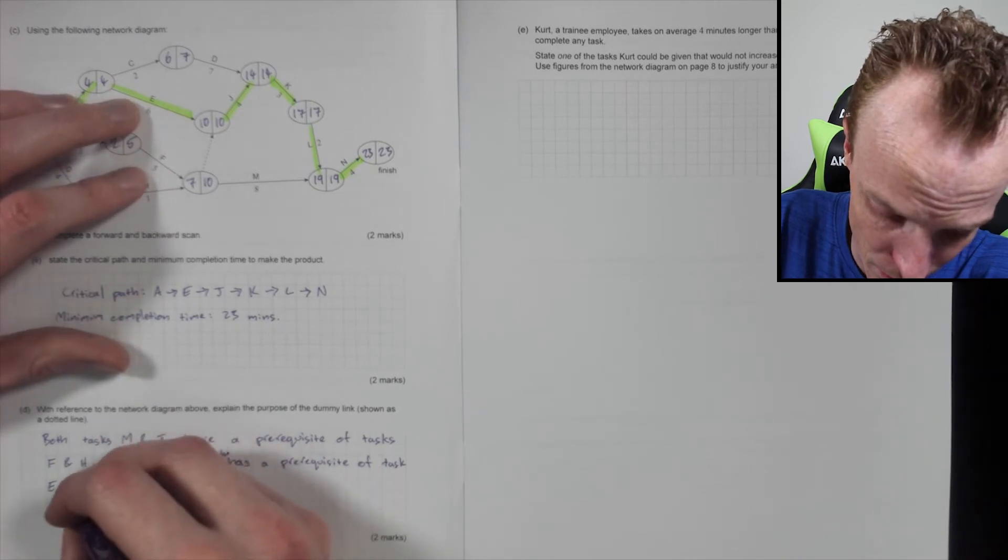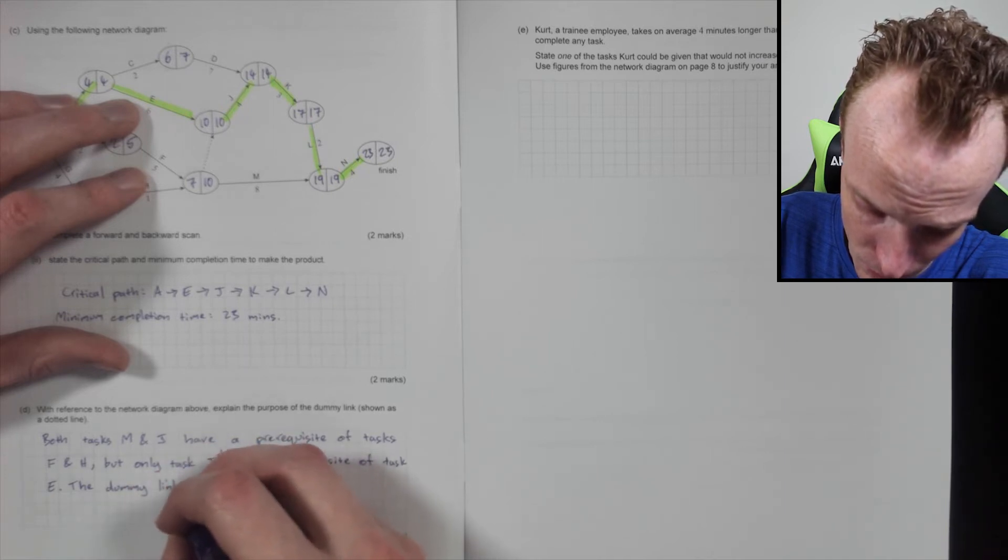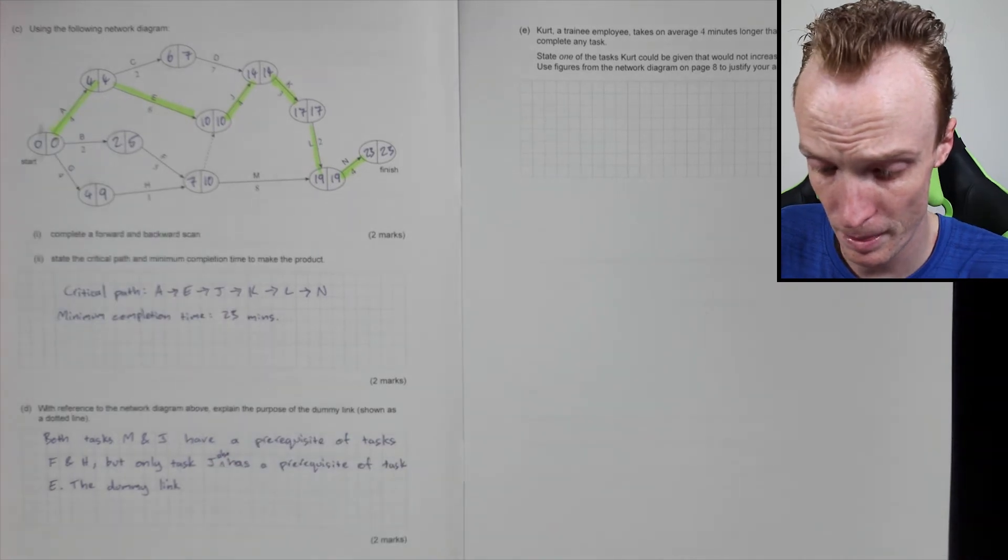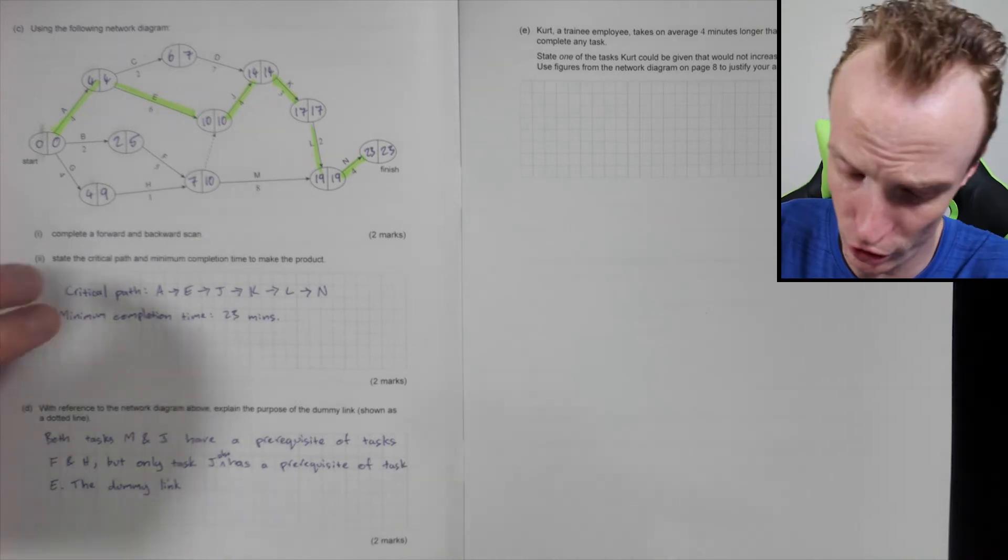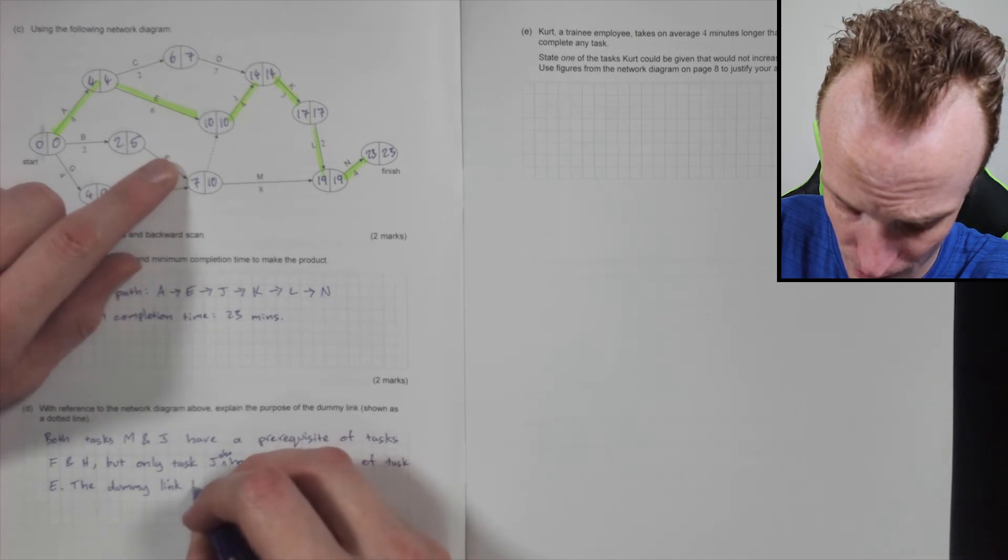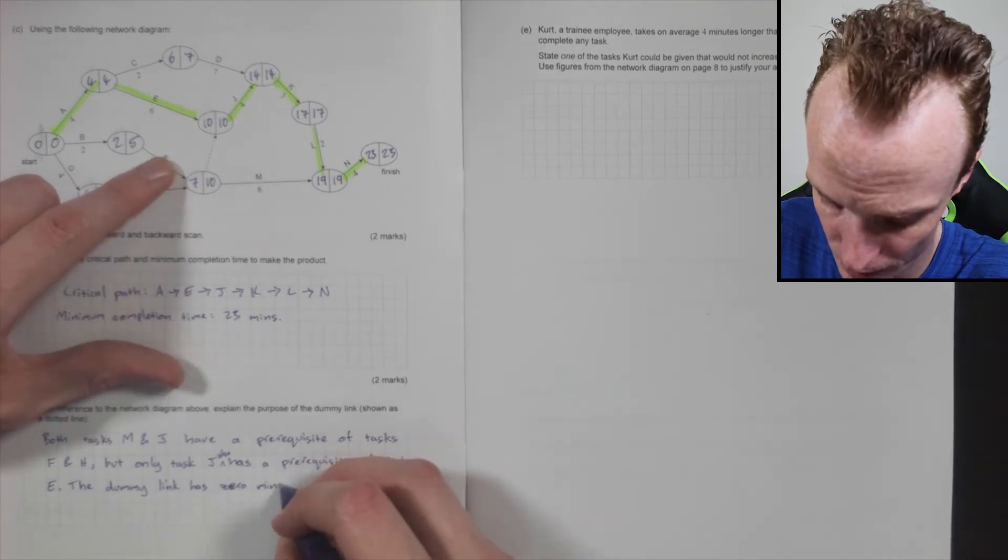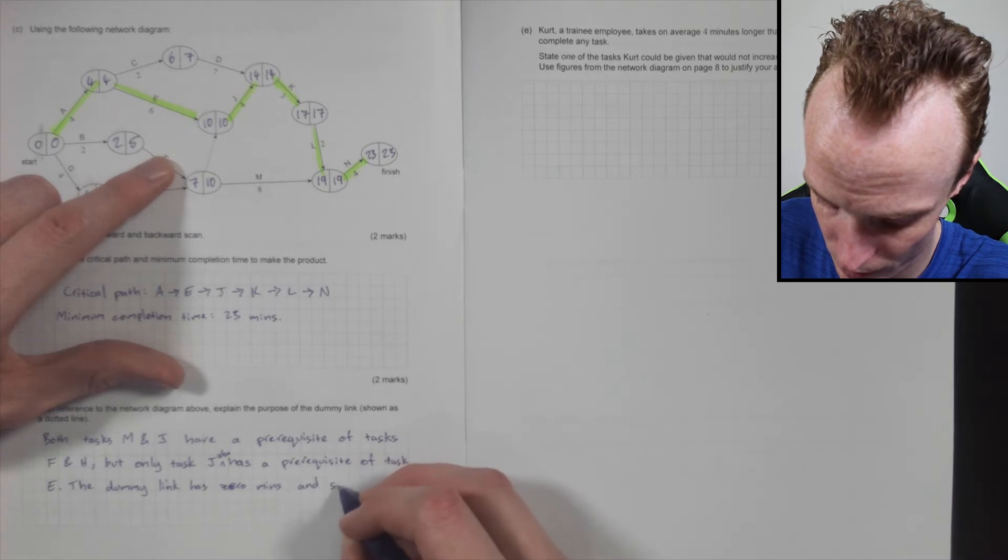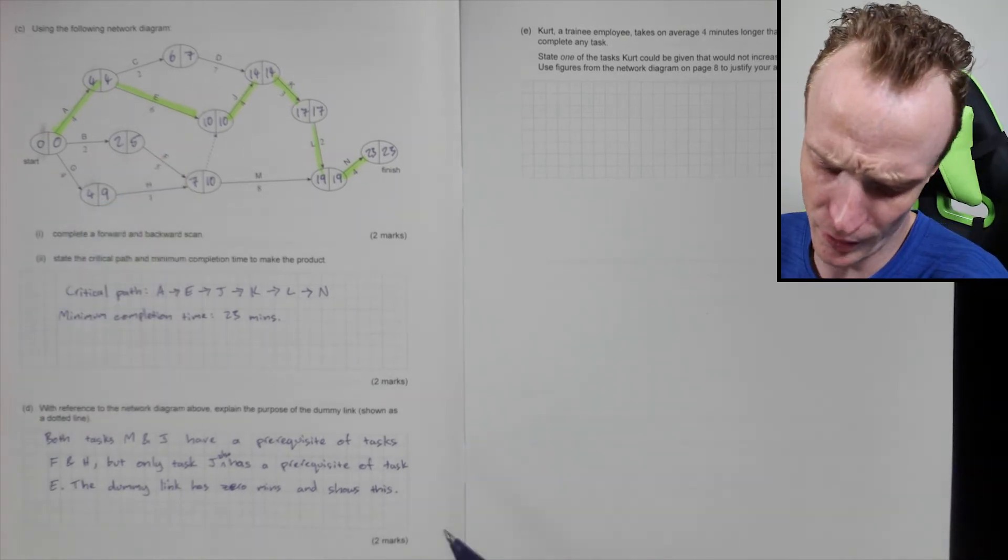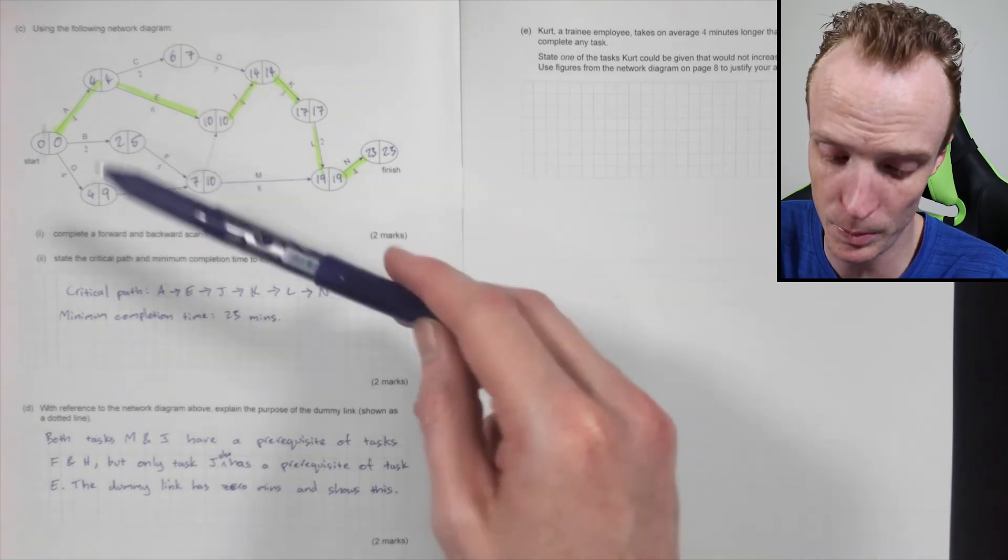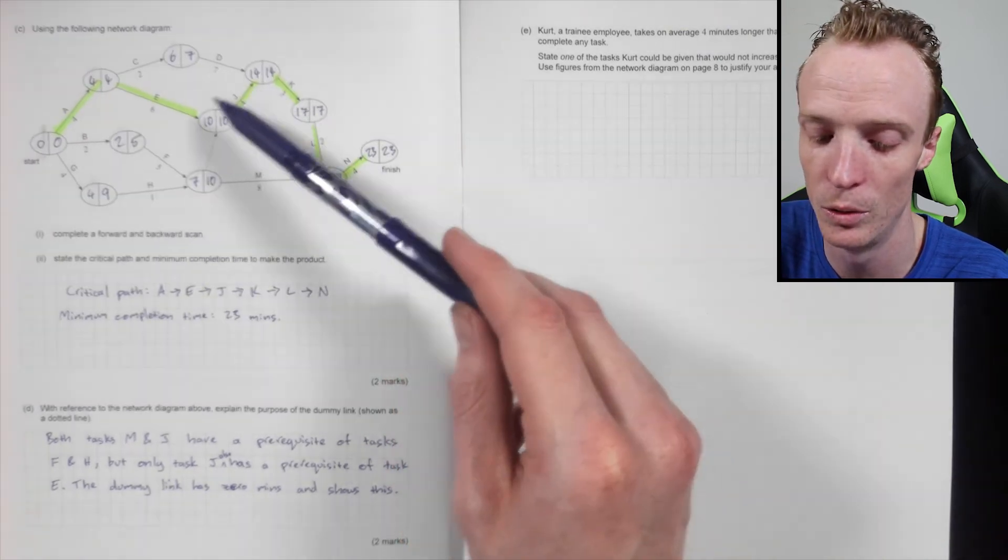The dummy link, how would I say this, the dummy link has zero minutes and shows this. I might just say shows this—basically, two marks that I can see would be for identifying very specifically that both of them do have that prerequisite of these two, but task M can be started with only those two completed, where task J also needs task E completed. That's really where the marks are coming from.